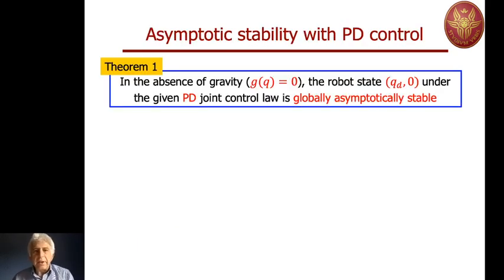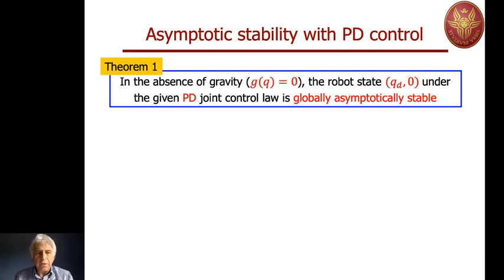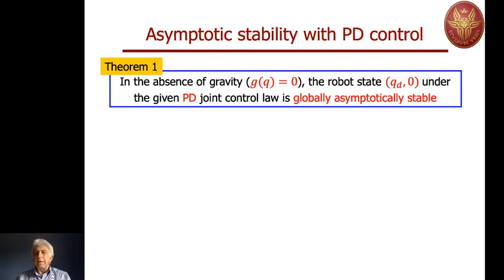We will therefore place ourselves in the condition where g(q) is identically zero for studying the behavior of this simple control law. We have a theorem to prove now: in the absence of gravity — when g(q) is identically zero, so motion occurs at constant potential energy — the desired robot state (qd, zero velocity) is a globally asymptotically stable equilibrium under the given PD joint control law. Despite the highly coupled and nonlinear dynamics, a linear control law like PD control achieves quite an important result.